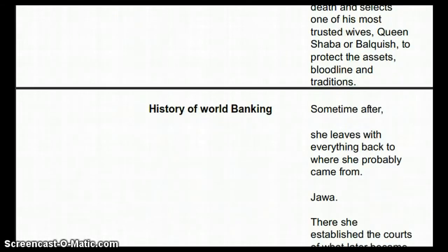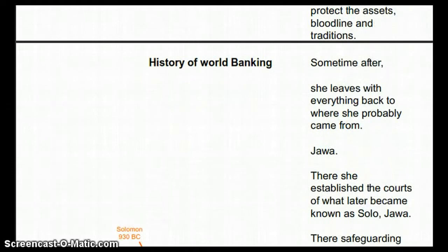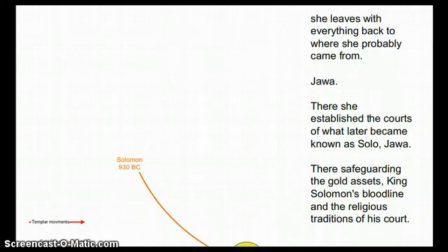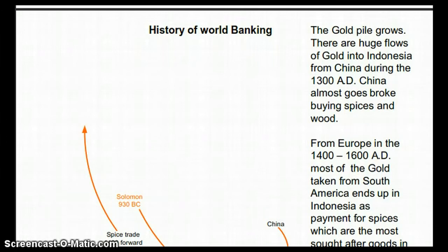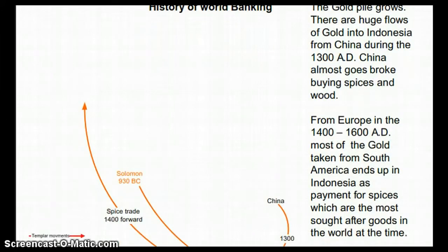After Solomon's death, Queen Sheba left with everything, back to where she came from — Jawa, which is Indonesia. There she established the courts of what later became known as Solo, after Solomon. The gold pile grows: there were huge flows of gold into Indonesia from China during the 1300s AD, as China nearly went broke buying spices and wood. From Europe in the 1400s to 1600s, most of the gold taken from South America ended up in Indonesia as payment for spices, the most sought-after goods in the world at that time.